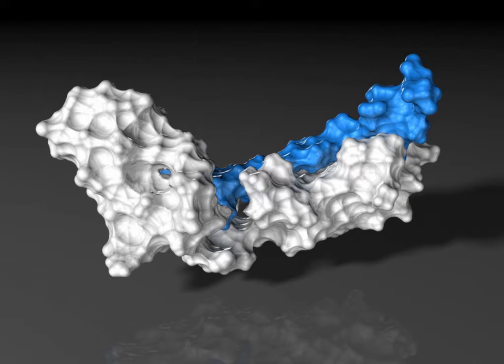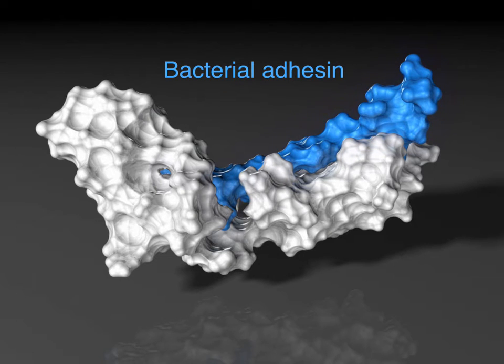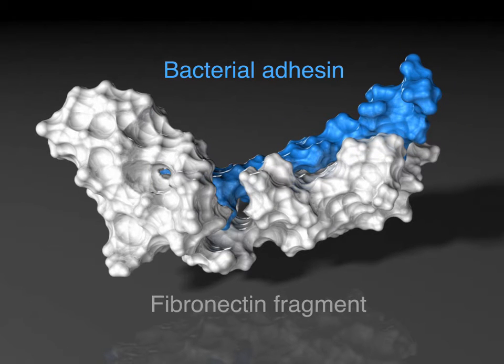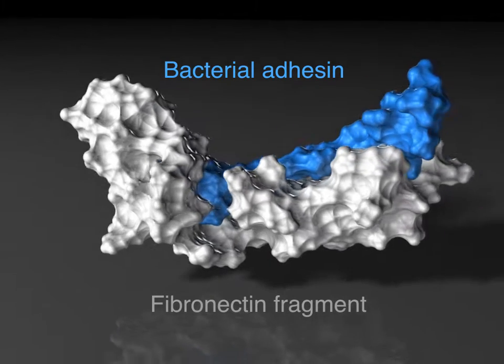Pathogenic bacteria have evolved specialized adhesins to bind to the protein fibronectin, an important component of the extracellular matrix.